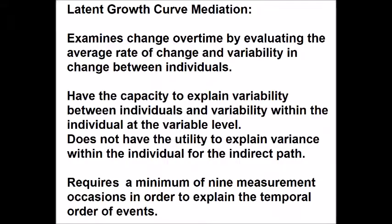Latent growth curve mediation examines change over time by evaluating the average rate of change and variability in the change between individuals. It has the capacity to explain variability between individuals and variability within the individual at the variable level. However, it does not explain variance within the individual for the indirect path, and it requires a minimum of nine measurement occasions to establish evidence of temporal precedence.